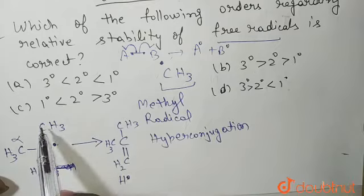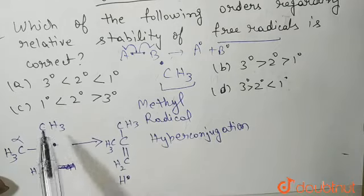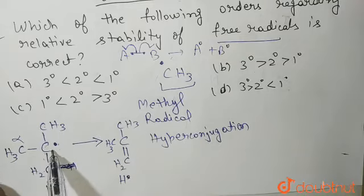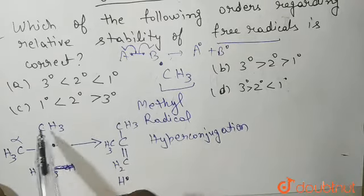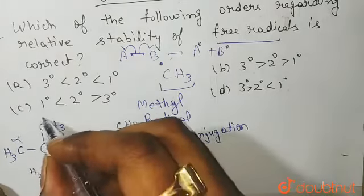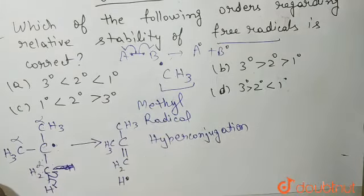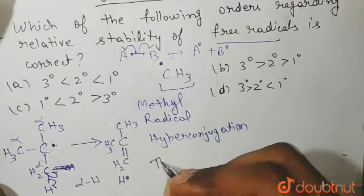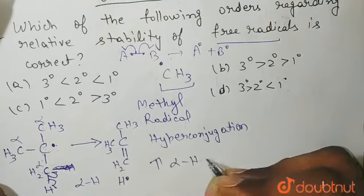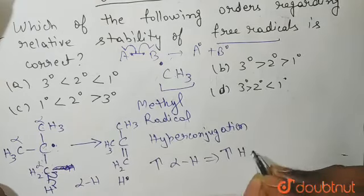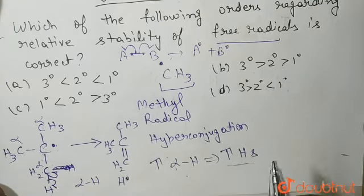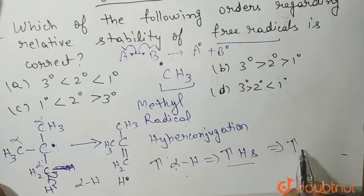The carbons directly attached to the carbon carrying the radical are alpha carbons. The hydrogens present on these alpha carbons are called alpha hydrogens. In hyperconjugation, the more the number of alpha hydrogens, the more hyperconjugating structures are formed, and thus more is the stability.